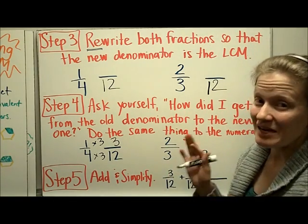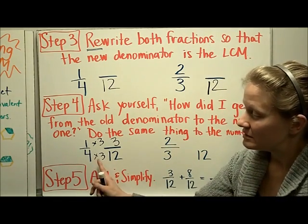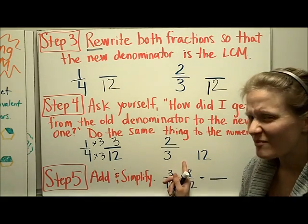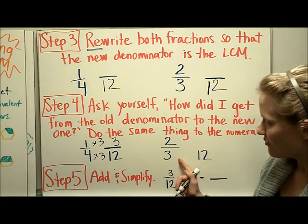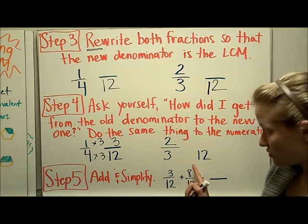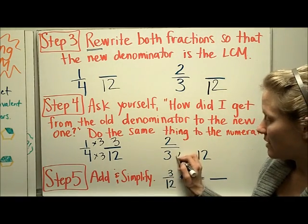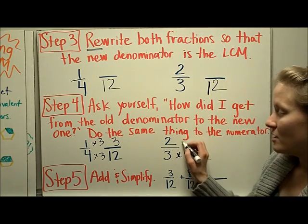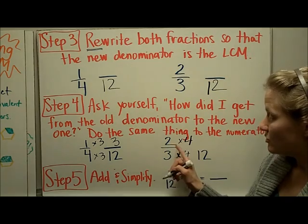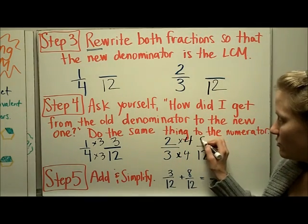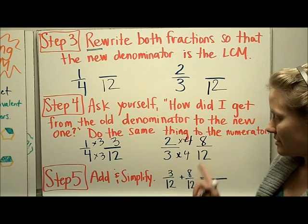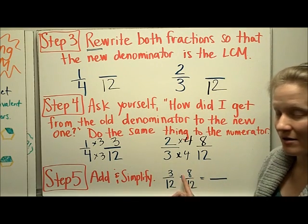I need to do that step again. Sometimes people think if I multiply by three here, I must multiply by three on the other fraction too — but it's a different fraction because I need to do something different to get from three to twelve. Three times four is twelve, so I need to do the same thing to the top: times four. Two times four is eight, and the new numerator is eight. So now we have three-twelfths plus eight-twelfths.